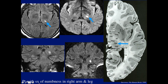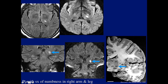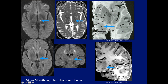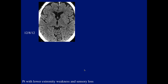Another patient with numbness in the right arm and leg: lesion on the left side of the thalamus in the region of the ventral posterolateral nucleus — on coronal image it fits perfectly. Another patient with right hemibody numbness: a small stroke with multiple other lesions, but this one in the location of the VPL — ventral posterolateral nucleus of the thalamus — explains the symptomatology.